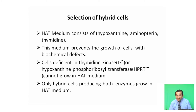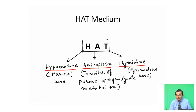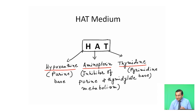In the HAT medium, H stands for hypoxanthine, which is a purine base. Thymidine is a pyrimidine base — these are exogenous sources of purine and pyrimidine. Aminopterin is an inhibitor of purine and thymidylate metabolism, so it inhibits the synthesis of purines and pyrimidines. This is the composition and importance of the HAT medium.